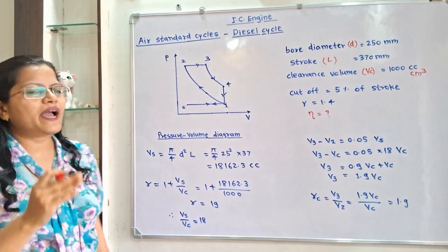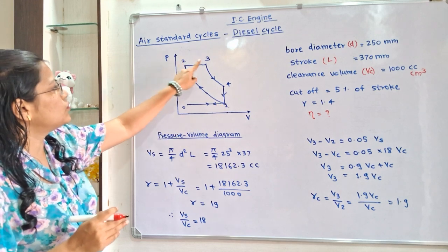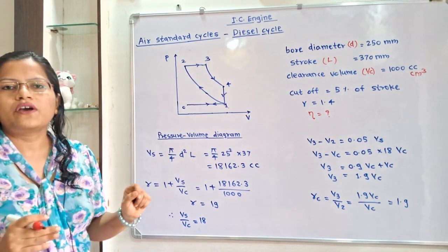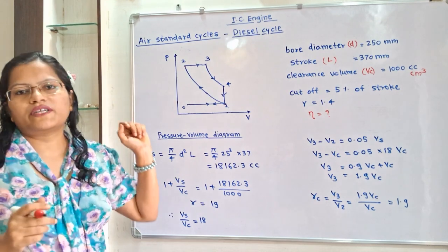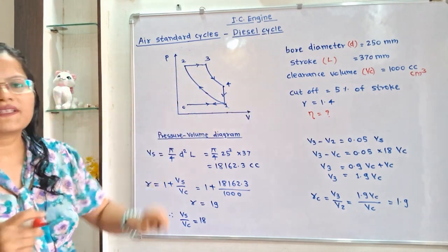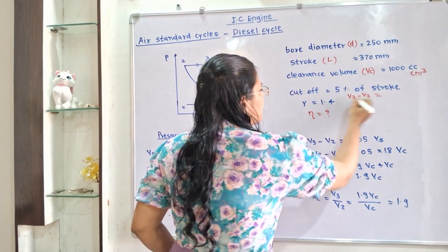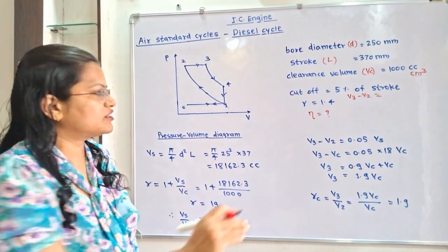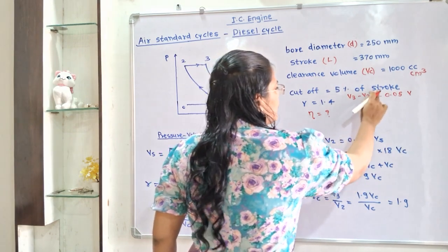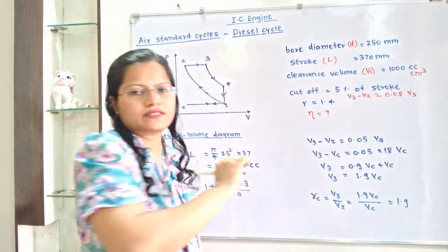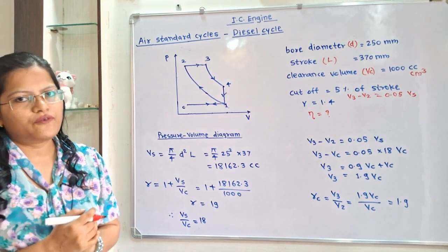The cut-off is 5% of the stroke. In the PV diagram, processes are 1, 2, 3, 4. During these processes, cut-off is V3 minus V2, so we can say V3 minus V2 equals 0.05 of the stroke volume Vs. Gamma is equal to 1.4, and we have to find the air standard efficiency of the cycle.